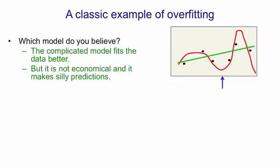So if you look at the blue arrow, if that's the input value and you're trying to predict the output value the red curve will predict a value that's lower than any of the observed data points which seems crazy whereas the green line will predict a sensible value.